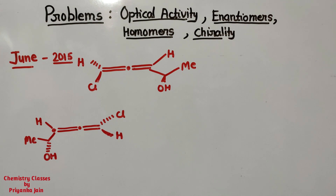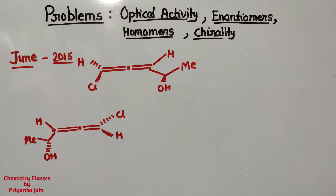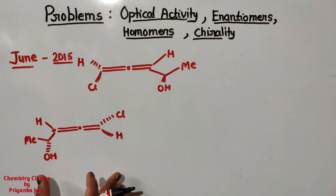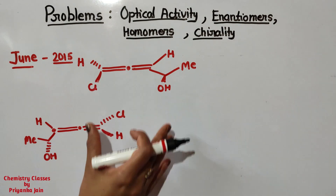Now we have to study questions. We have seen various questions based on topicity. Now we have to see questions about finding whether a compound is optically active or not, whether compounds are enantiomers, homomers, diastereomers, or chiral/not chiral. Here I have taken some questions. This question is from CSIR NET June 2015 question paper.